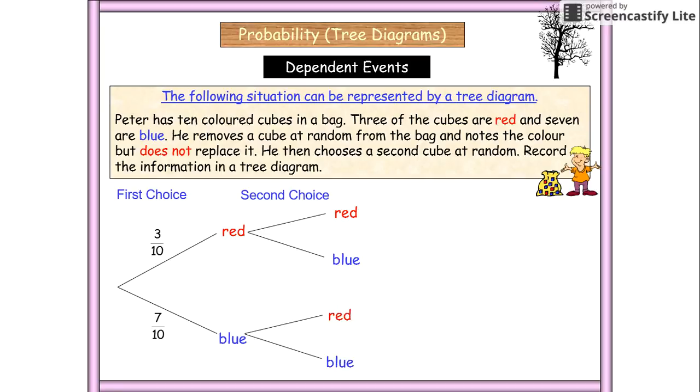Now, where this changes is we're not going to replace one of them. So when we put our three out of 10 here for the red, we're going to say that we're not replacing one. So how many are left? There's nine. There's not going to be 10 anymore.